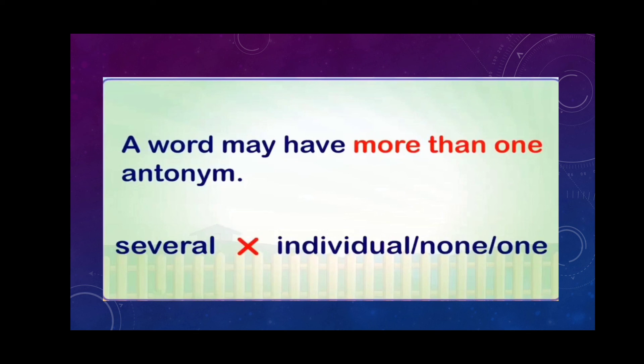A word may have more than one antonym also. Not just one opposite meaning, but it has more than one opposite meaning also. Like here: several has individual, none, one. These are examples of words that have more than one antonym.